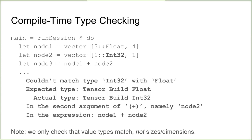Not only do we get type inference, we also get type checking. If we explicitly or implicitly forced the second node to be an Int32, we would get a compile-time error saying Float and Int32 don't match. As far as I know, Haskell and maybe Rust are the only language bindings that do this — though Greg is shaking his head that Rust doesn't. This is one of the powerful things a language like Haskell can do for this type of API.